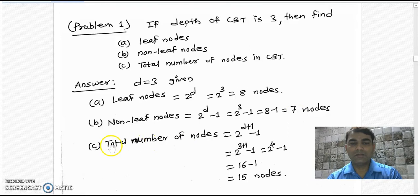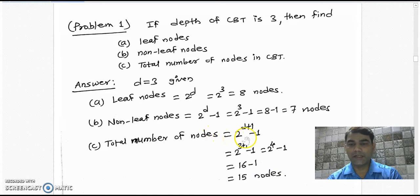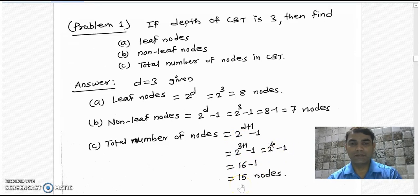The total number of nodes in the complete binary tree can be calculated by the formula 2 raised to d+1 minus 1. Just put the values here. You will find 2 raised to 4 minus 1, that is 16 minus 1, which is 15 nodes in the complete binary tree of depth 3.